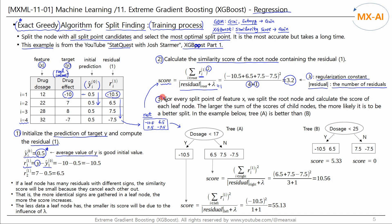In Step 3, all split-point candidates of Feature X are used to split the root node into child nodes. We then calculate the similarity scores for each child node. Similar to the CART algorithm, all split-point candidates between data points must be used — this is the exact greedy algorithm. Let's consider two split points, A and B.